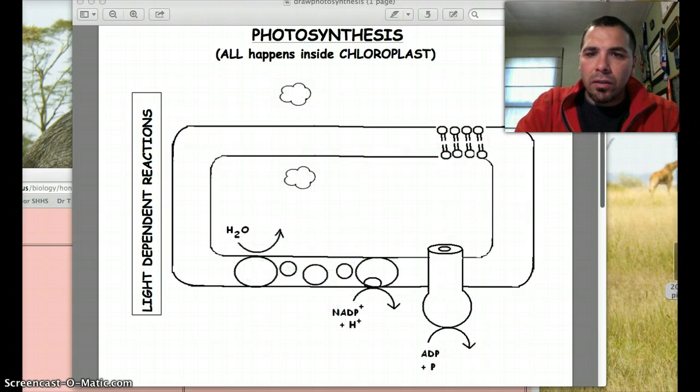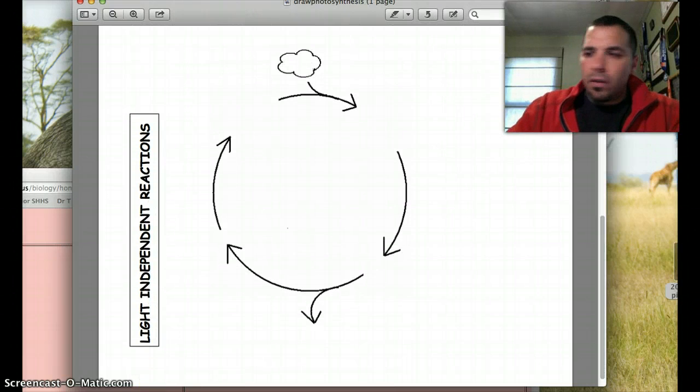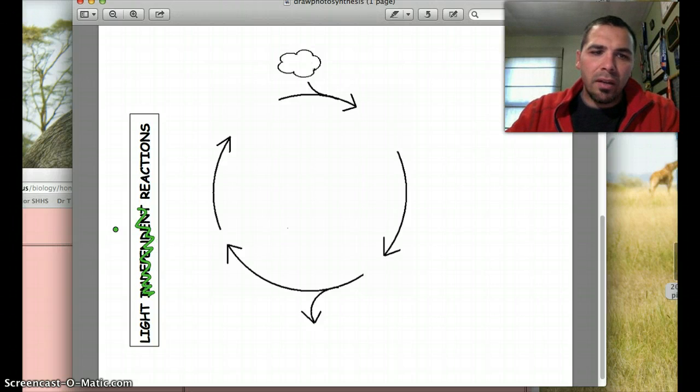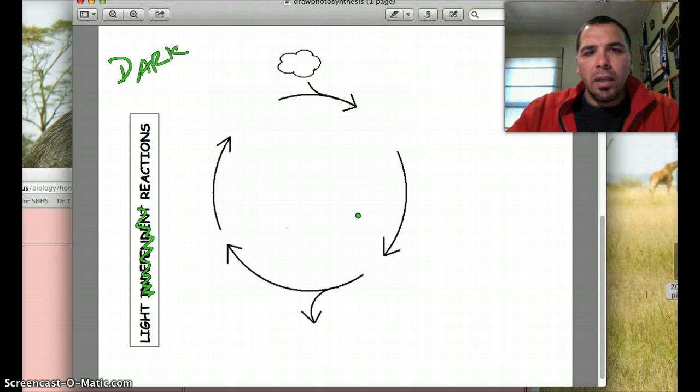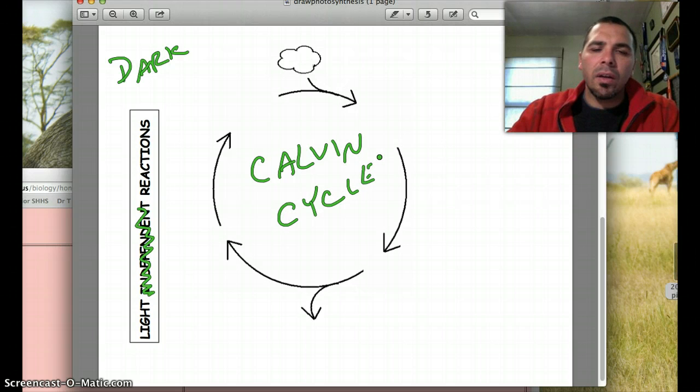Now we're going to move on to the dark reactions. Let me move this down a little bit. So people will sometimes get these terms confused. You can call it light independent. I'm just going to call it the dark reactions for this point. And what we call this is the Calvin cycle.